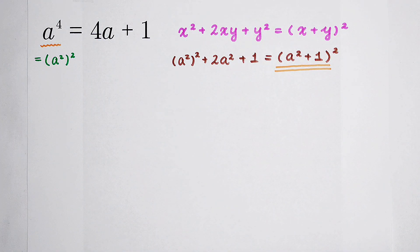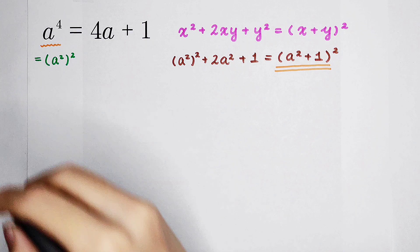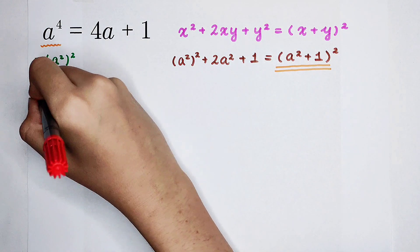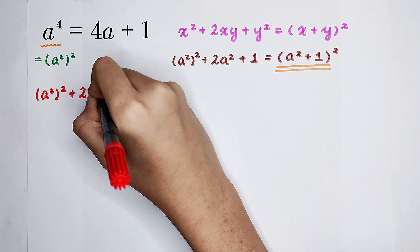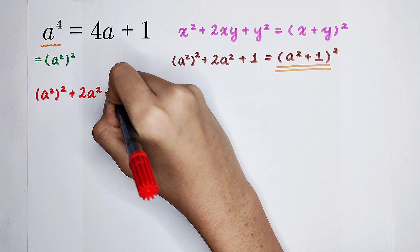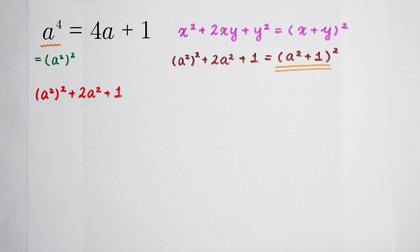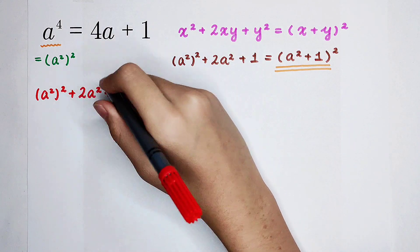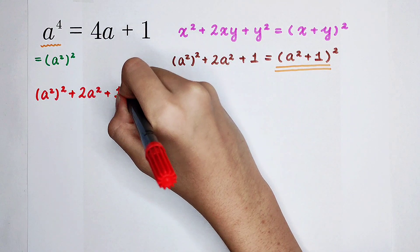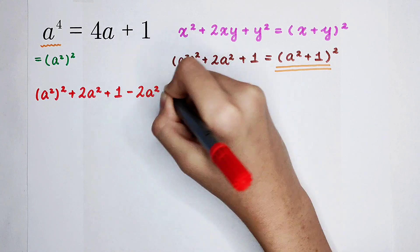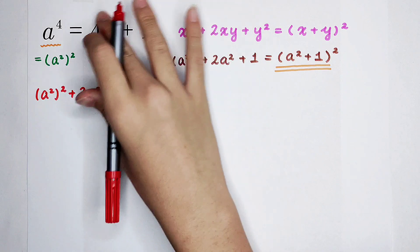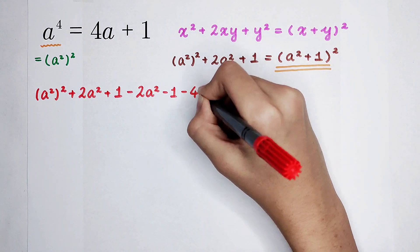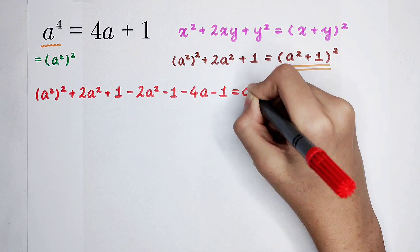Now, I'm going to do some changes. a to the power of 4 can be regarded as a squared all squared. And then I'm going to add 2a squared and 1. Because I've added them, I should subtract them. Now, because there are something on the right hand side, I'm going to subtract them on both hand sides. So that is then minus 4a and then minus 1 equals 0.